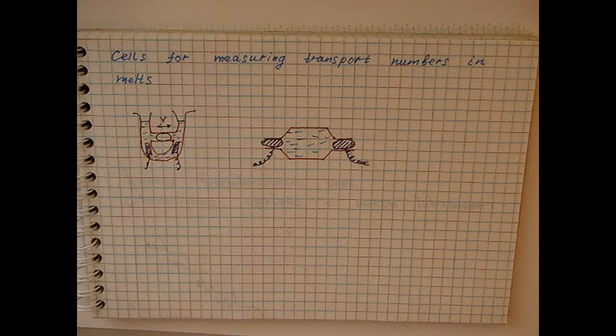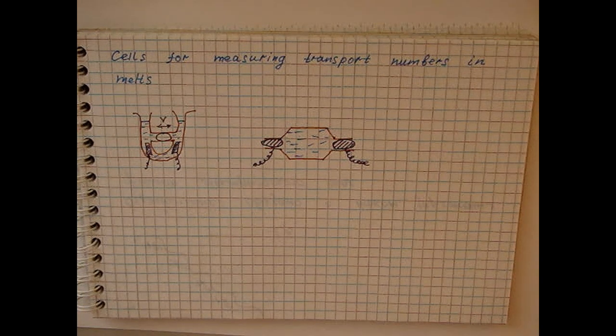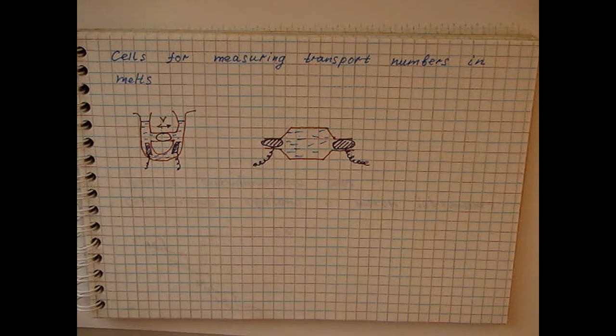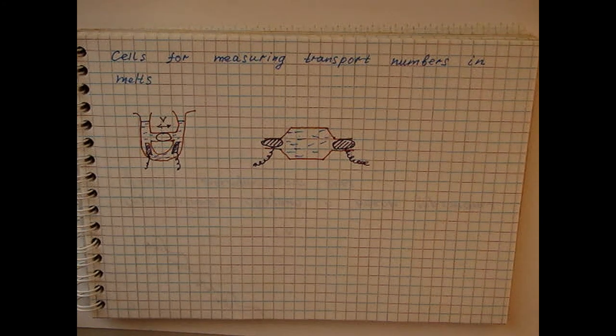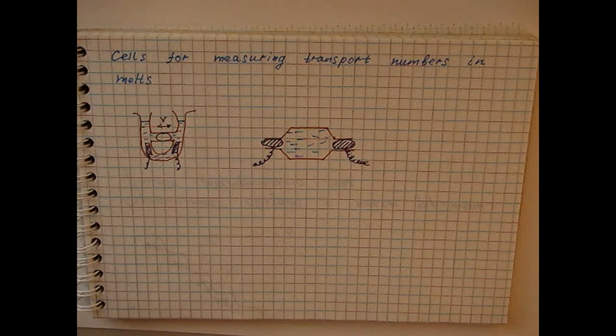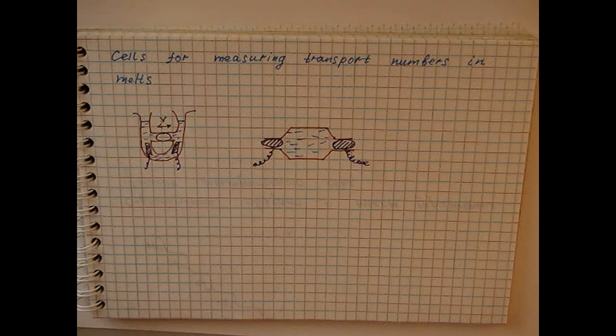In practice, mixtures of molten electrolytes are usually used. Mixtures often have a lower melting point than the individual components. Sometimes, when non-conductive melts are mixed, we can get systems with high electrical conductivity.